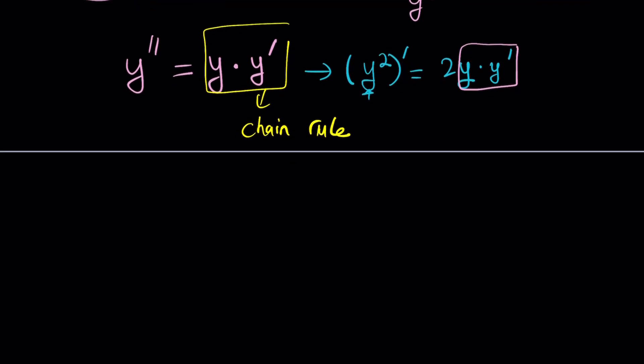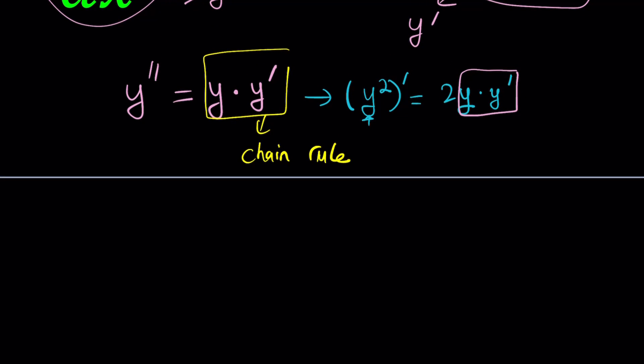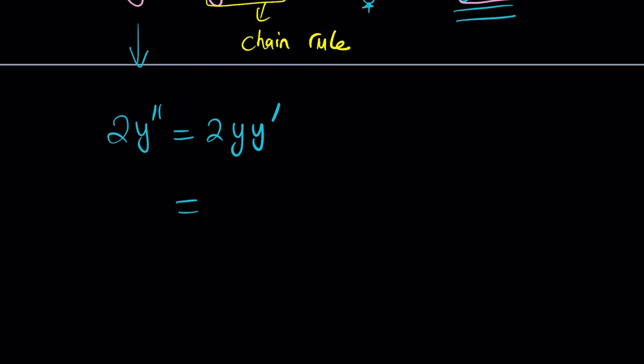Now, we're going to go ahead and multiply both sides by 2 here. So, 2y double prime equals 2yy prime. And, as you know, 2yy prime is the derivative of y squared, right? What about 2y double prime? Is that the derivative of something? Well, of course. We just defined it, right? Y double prime is the derivative of y prime. Make sense?